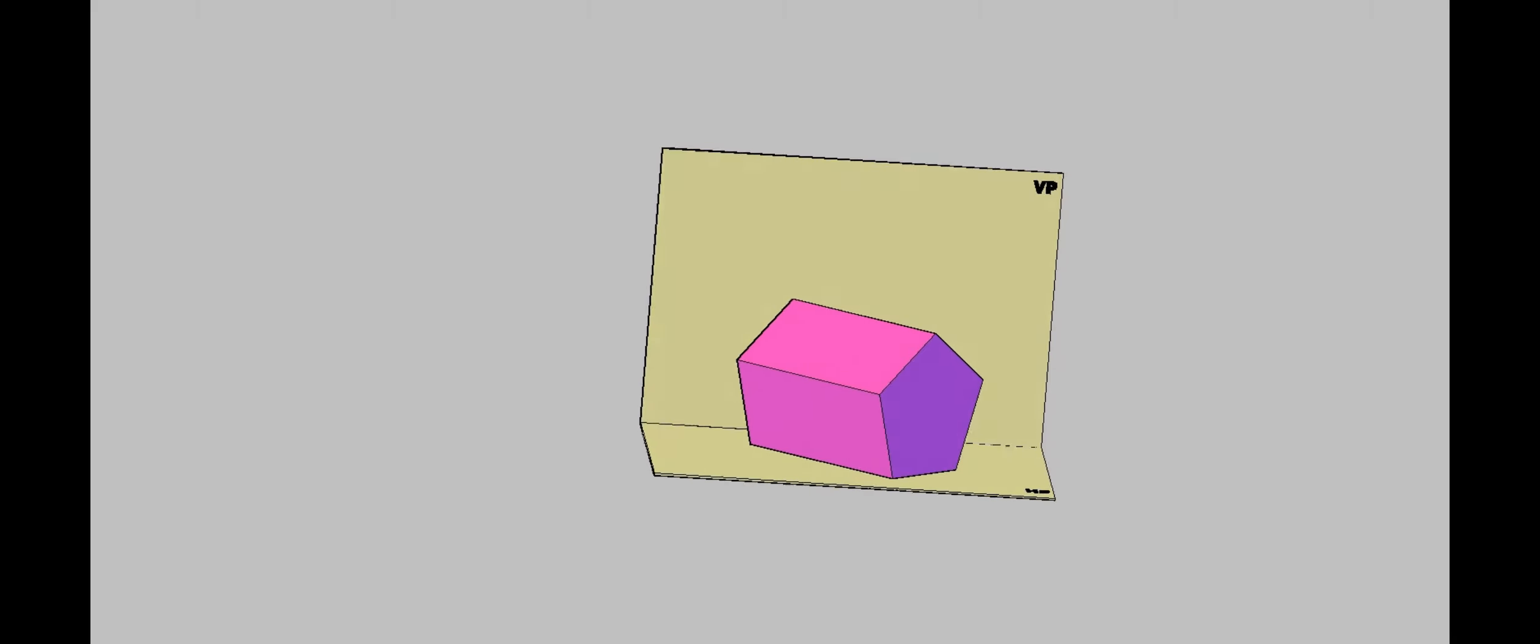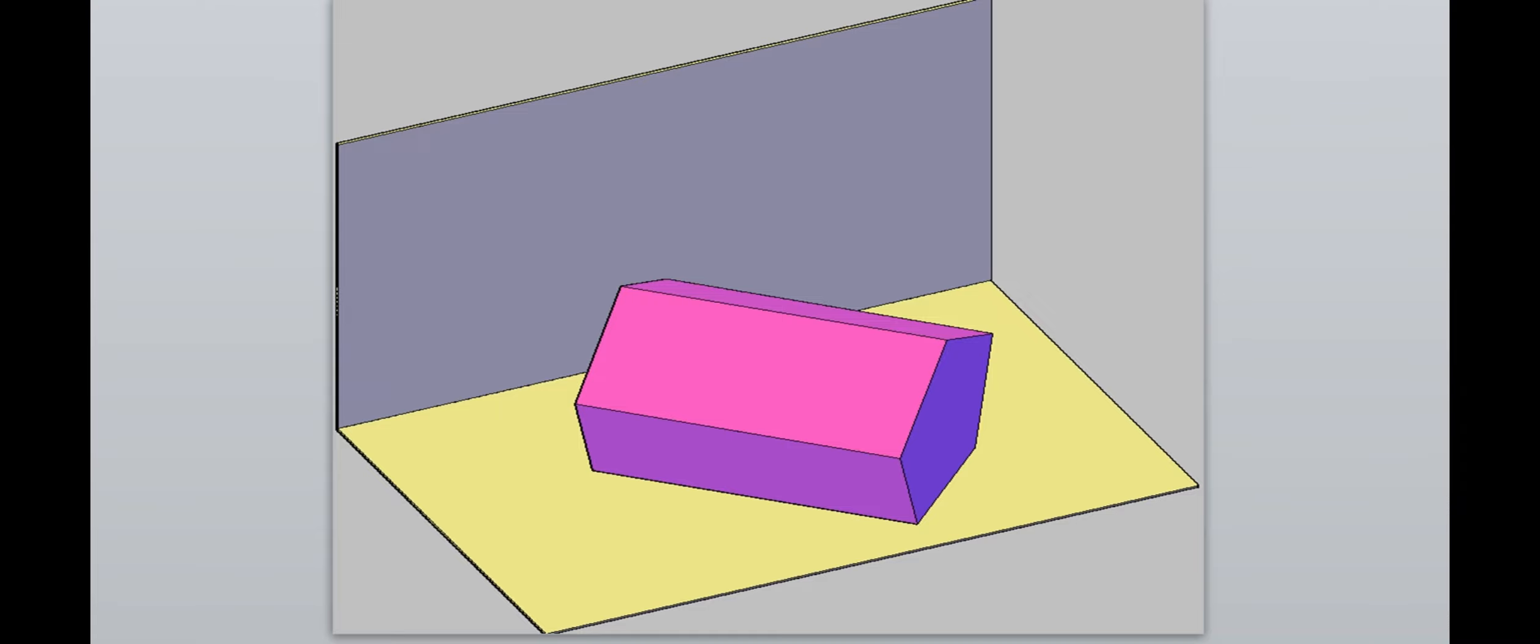So the axis also will be parallel to HP. Since the axis is inclined to VP, the answer will have two stages.